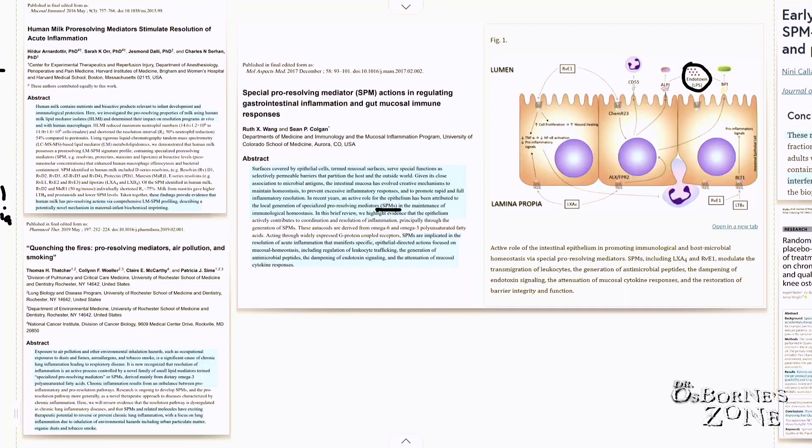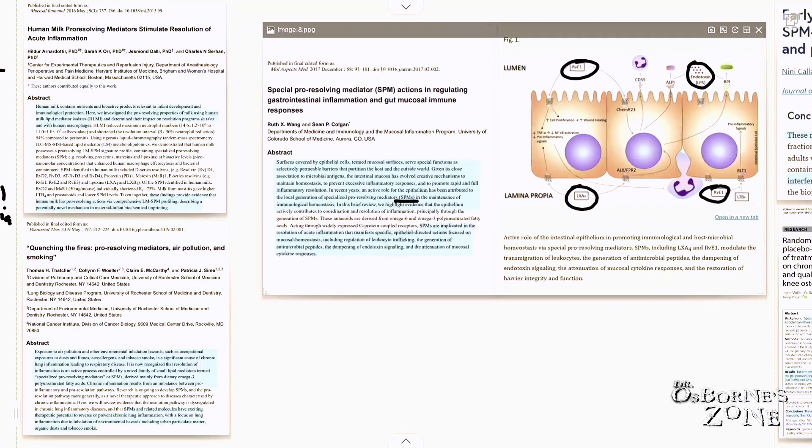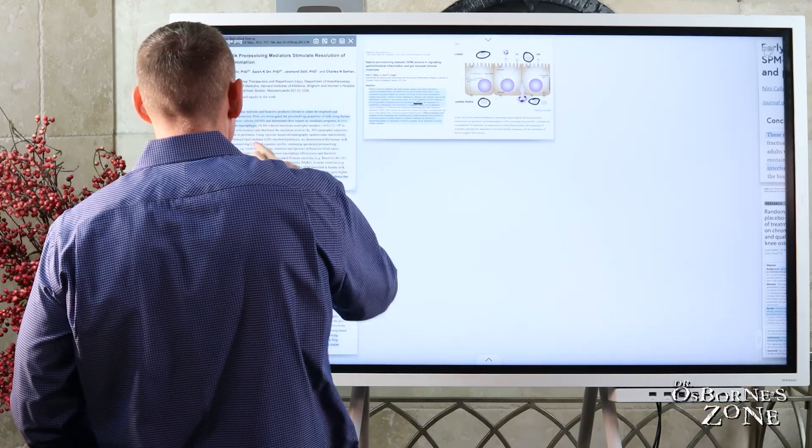including the regulation of leukocytes or white blood cell trafficking, the generation of antimicrobial peptides, the dampening of endotoxin signaling, and the attenuation of mucosal cytokine response. So multiple mechanisms here. You can see this RVE1, that is an SPM, Lipoxin A4 is an SPM. There's different mechanisms at play that your gut cells can produce these fats, these fat byproducts to modulate and control the immune system and prevent an aggressive inflammation from causing leaky gut, which would lead, as you all know, hopefully at this point, to a host of different types of problems.